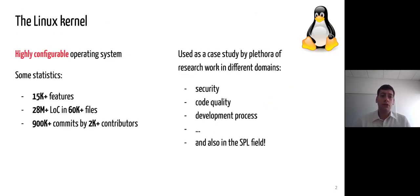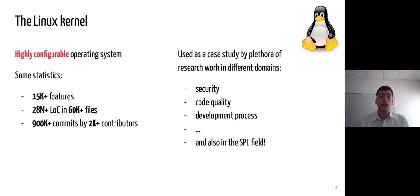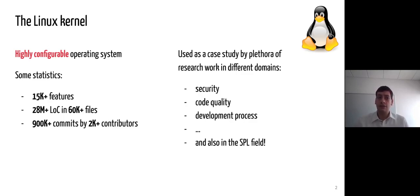We know the Linux kernel not only because it is a widely used operating system, but also because of its impressive statistics, which made it an important use case for research work in various domains, such as security, code quality, analysis of its development process, both on the code management and organizational points of view, but also notably in the software product line community for the study of its build system, which manages more than 15,000 features, used in more than 60,000 files, totalizing over 28 million lines of code.